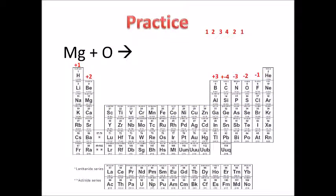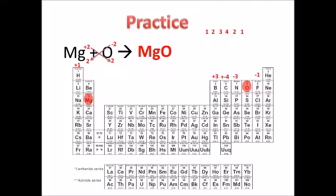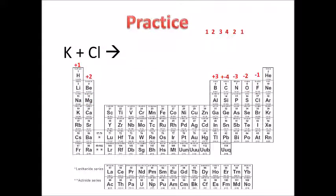Let's do some practice. First problem: Mg plus O produces what? We find magnesium on the periodic table — it's in group two, so its oxidation number is positive two. Oxygen is in group 16, so it has a negative two oxidation number. We drop the signs and cross the numbers: the two comes down as the subscript for magnesium, and the two comes down as the subscript for oxygen. The answer is MgO — a one-to-one ratio.